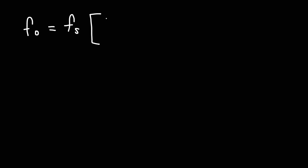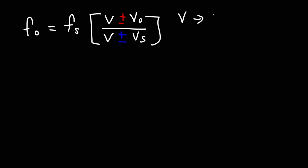Now let's talk about the formula we can use to solve problems. The observed frequency FO is equal to the frequency of the source FS, times the quantity V plus or minus VO over V plus or minus VS. V is the speed of sound, which is 343 meters per second.